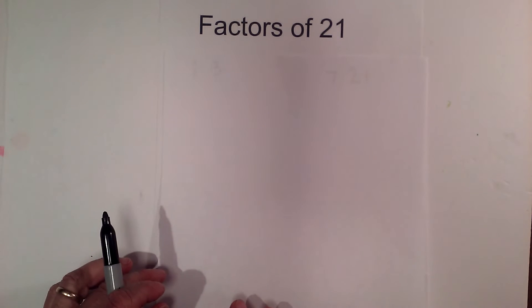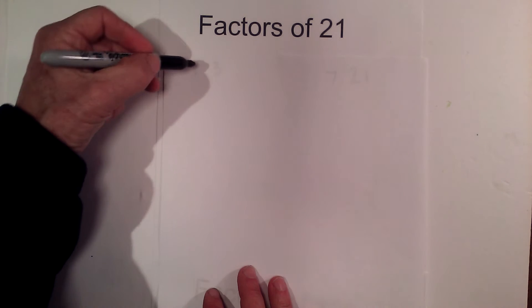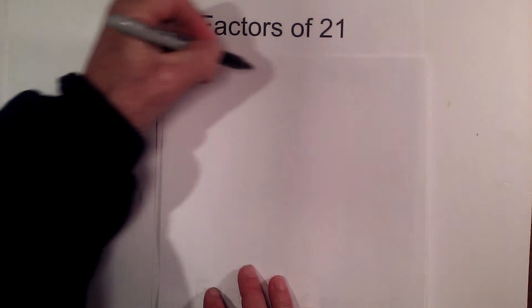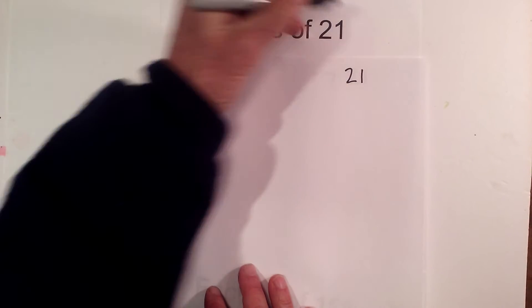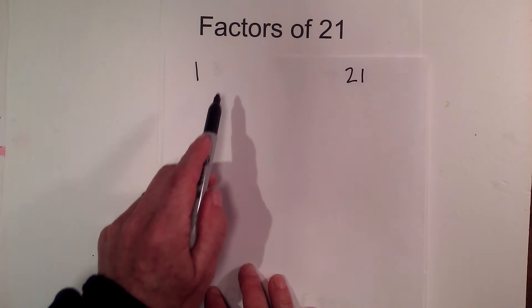In this video, let's find the factors of 21. I like to use a modified rainbow method, so I'll write a 1 here and a 21 here because I know 1 times 21 equals 21.